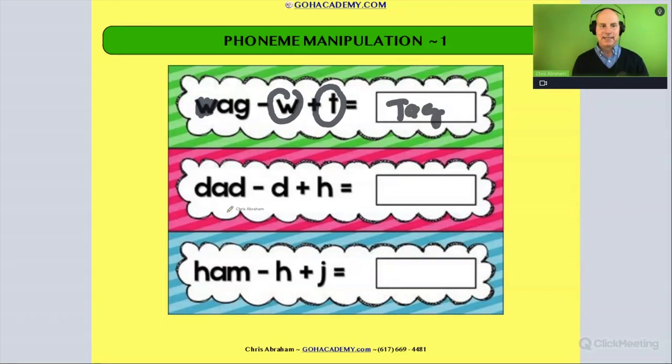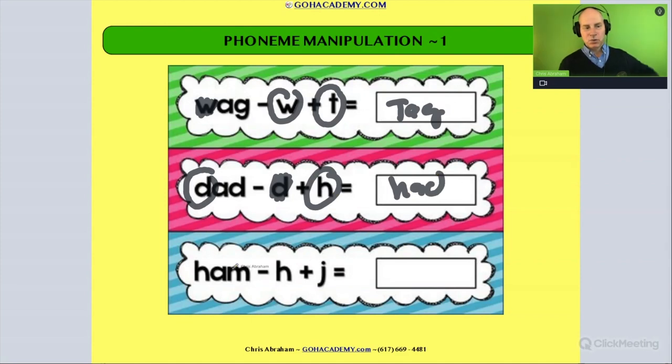Here's another one. We have 'dad.' We identify the 'd,' delete that 'd,' add an 'h,' and get 'had.' How about this one? We have 'ham.' We take away the 'h' in 'ham,' then add the 'j' and get 'jam.'